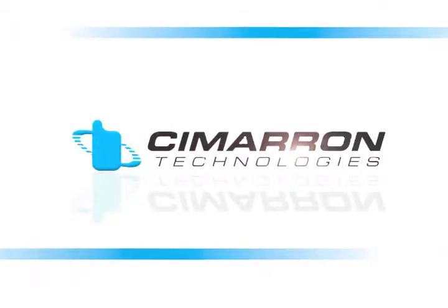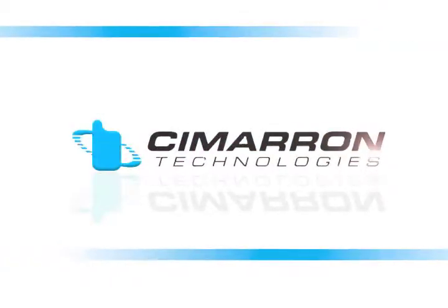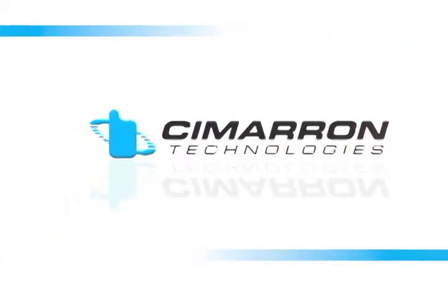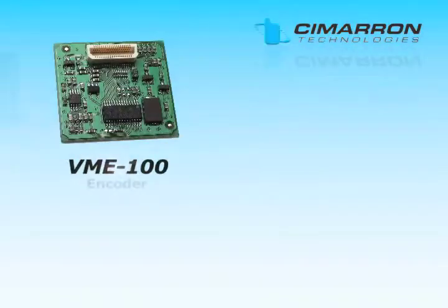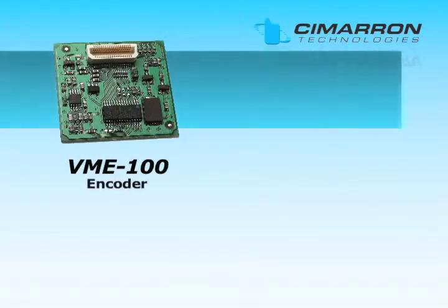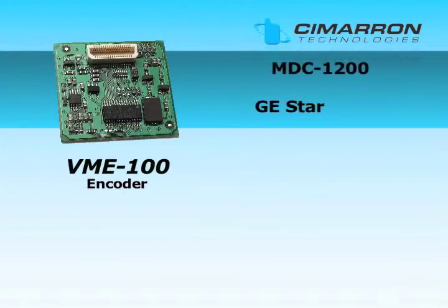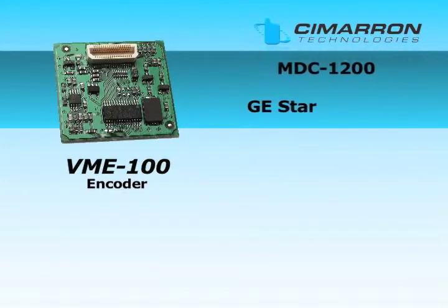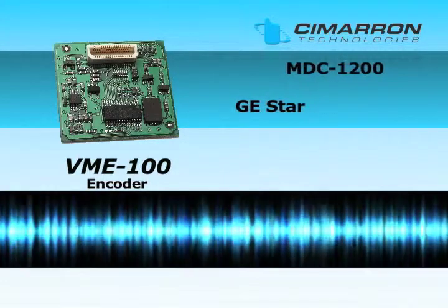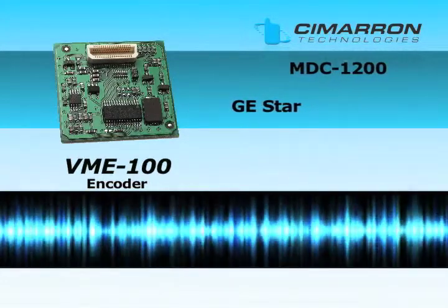Cimarron Technologies makes several plug-in boards for the Vertex standard line of products. The VME-100 is an MDC-1200 and GE-STAR ANI encoder. This allows the radio to be programmed per channel for MDC-1200 or GE-STAR ANI.